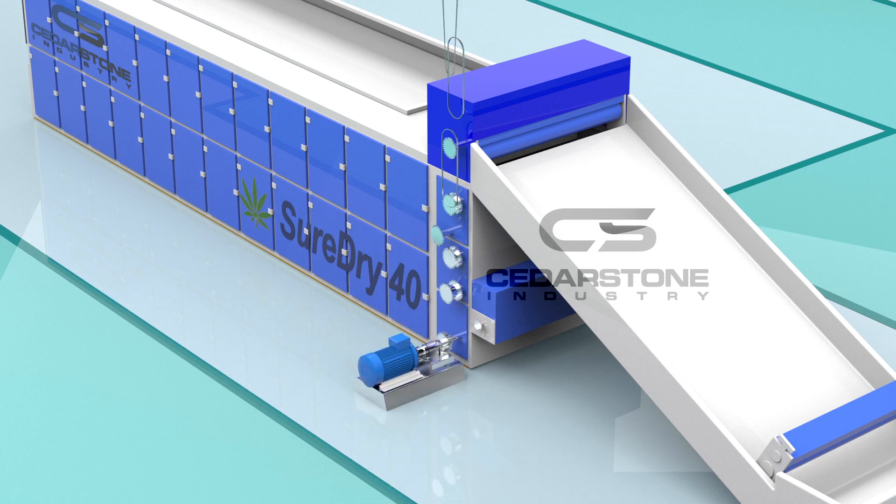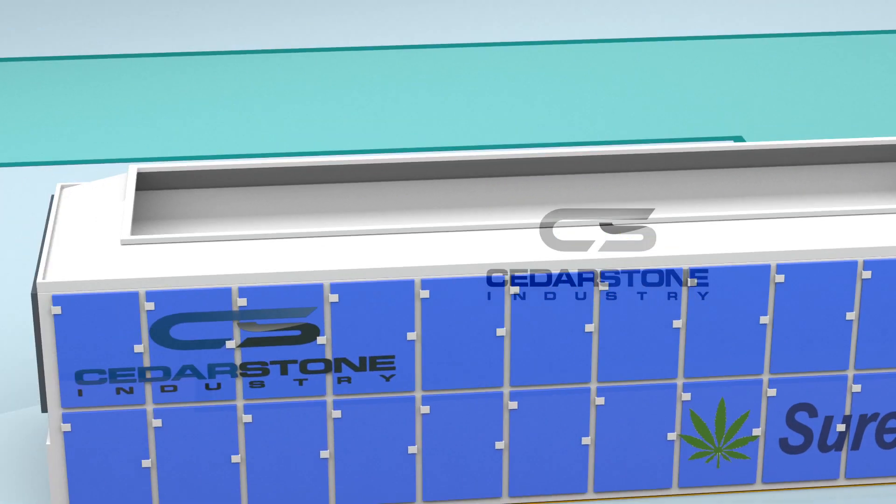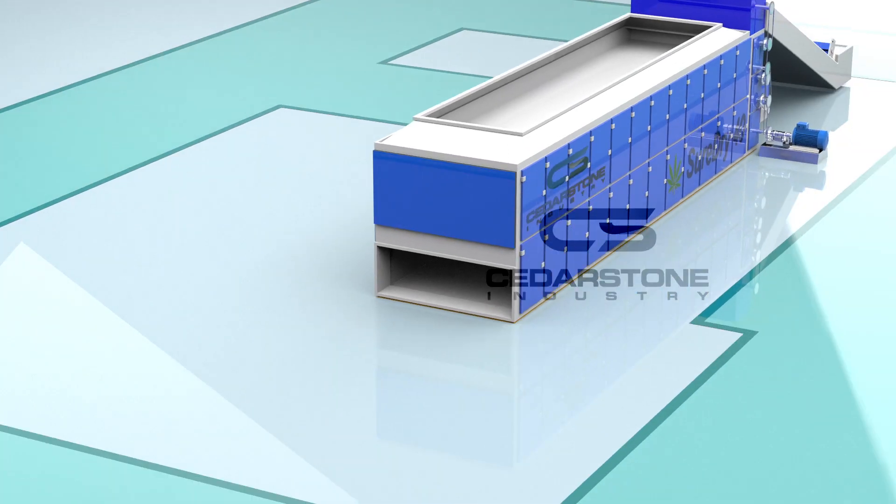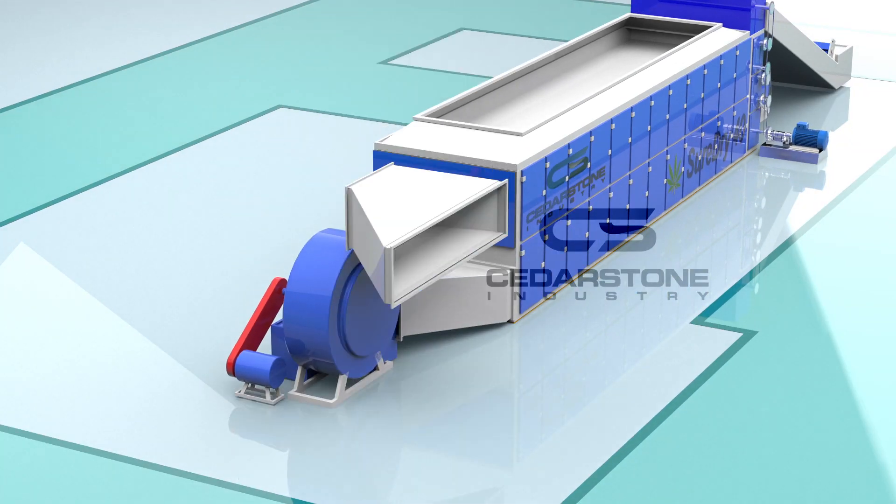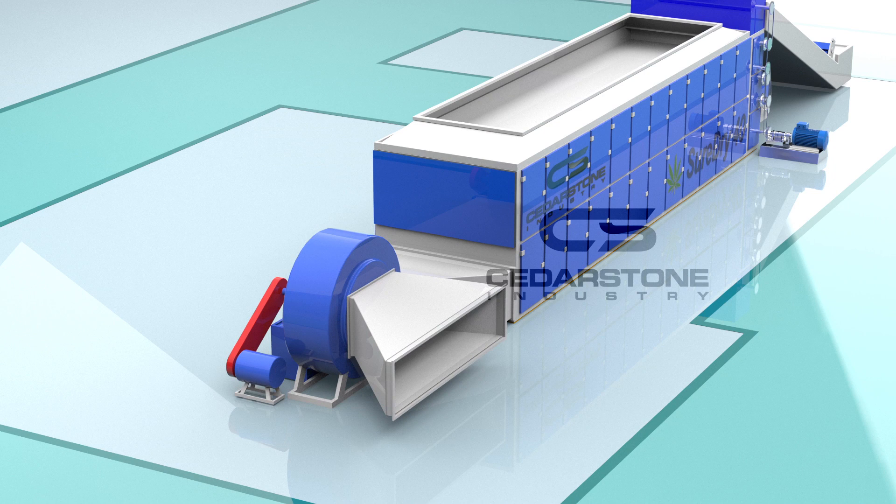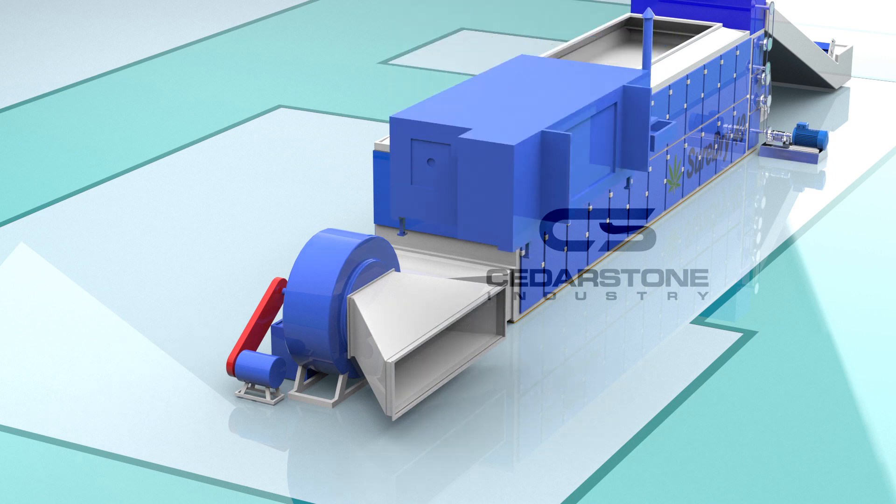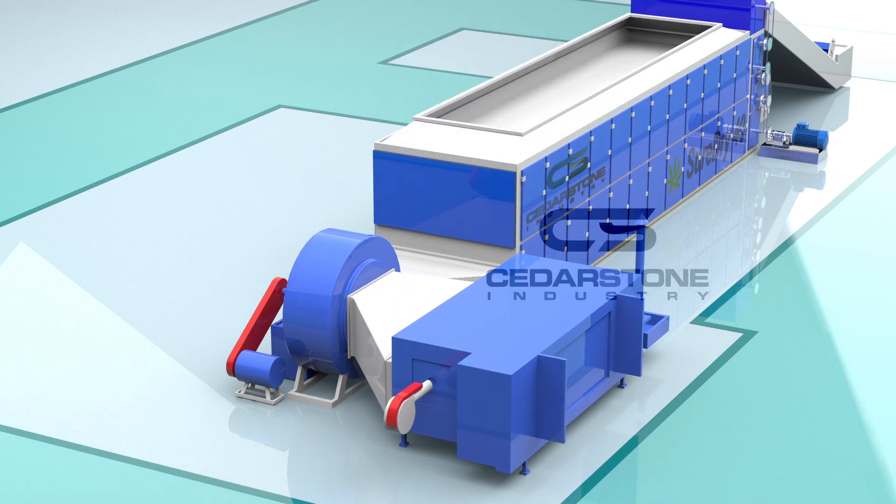This unit can process up to 1,000 pounds of raw stripped biomass per hour. The drying time from loading to perfectly dried output is approximately five hours. This system can be continuously fed to optimize your efficiency. The belt speed and temperature are both fully adjustable to meet your particular need.